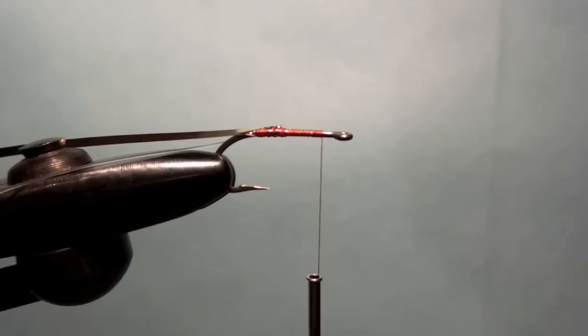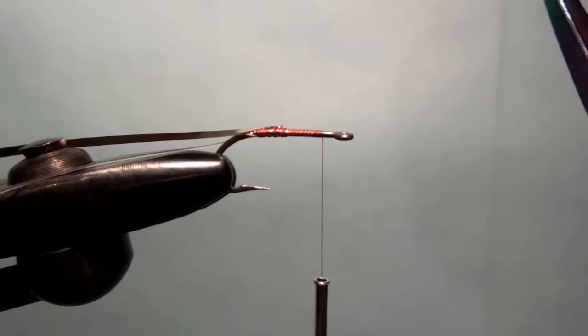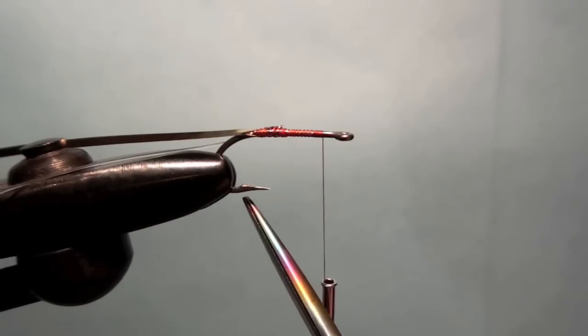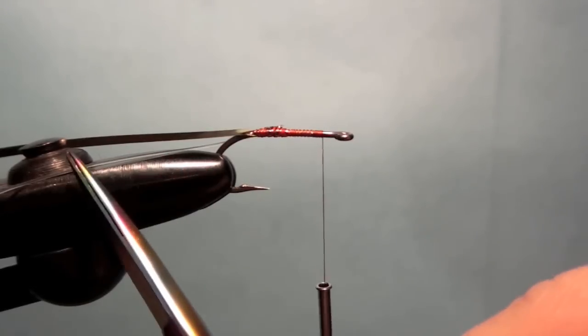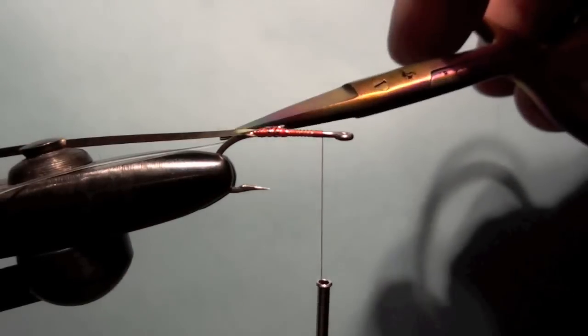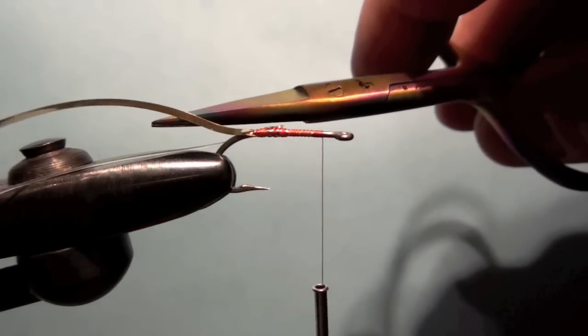I started off here by putting a Mustad 34007 size number six hook in the vise and crimping down that barb as required by our regulations. I've also attached a piece of 15 pound monofilament fishing line here and a piece of mylar tinsel, medium mylar tinsel.